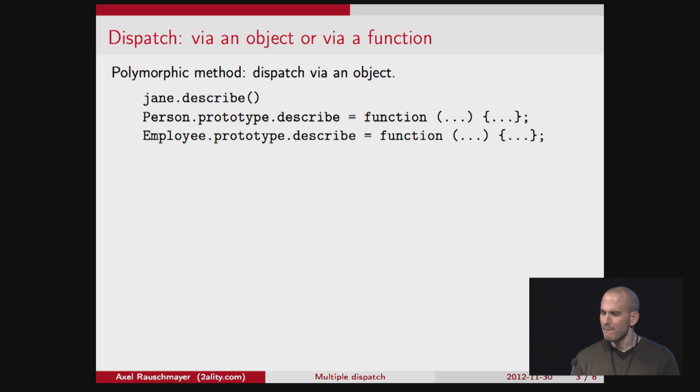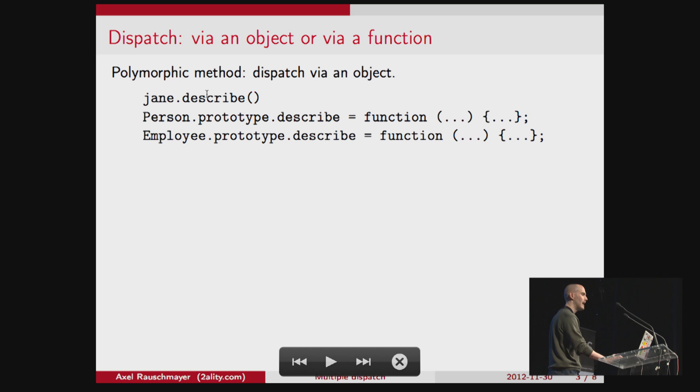So you can either dispatch via an object or via a function. And if you dispatch via an object, this is what it looks like. You have a polymorphic method called describe. And the type of Jane determines which of the two functions will be called if you make that method call up here. And it depends on whether Jane is a person or an employee.